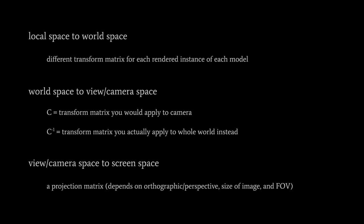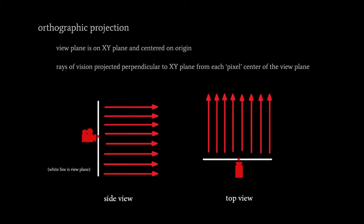Now what does this projection matrix look like? First, it's useful to imagine at the origin a so-called view plane — a rectangle of some width and height with its center on the origin, flat on the XY plane. You can think of this as an imaginary window into which we see the 3D world. For an orthographic projection, this is not a realistic kind of image — it's like a blueprint where parallel lines in space do not converge. You can imagine splitting the view plane into a discrete grid of pixel centers, with rays projecting perpendicular out from the XY plane up the Z axis.